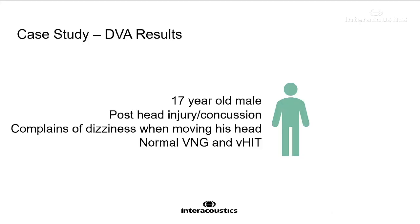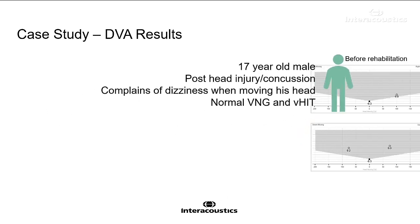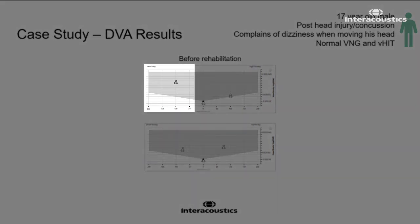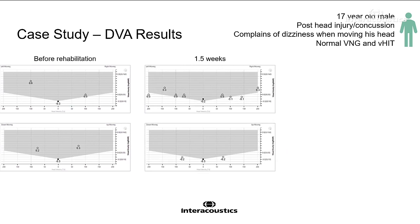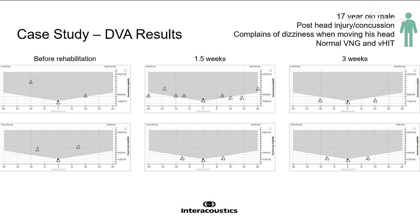Here's a nice example: a patient who came in on day one very dizzy when moving his head. On dynamic visual acuity testing, when he moved his head to the left, he had a value of 0.6 — well into the gray abnormal area of our normative data. He had poor scores moving left, somewhat better to the right but still abnormal, and problems in the vertical planes too. We sent him away for gaze stabilization exercises for a week and a half — his scores improved but weren't fully normal yet. After three more weeks of home exercises, he came back completely back to normal. Dynamic visual acuity is a really nice test to measure vestibular compensation over time.